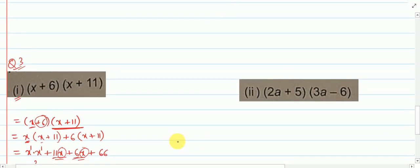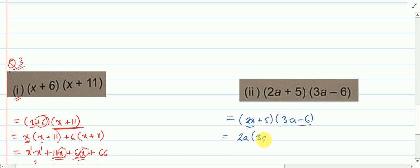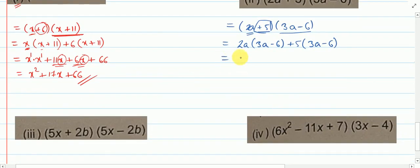Now let us see question number 2. Here we have (2a + 5)(3a − 6). So what we will do: we will take the first term 2a, then copy the second bracket. Then write the second term, plus 5, and copy the second bracket again. This 2a will multiply inside the first term, so you get 2a into 3a. Here plus, here minus, so plus into minus gives minus: 2a into 6.